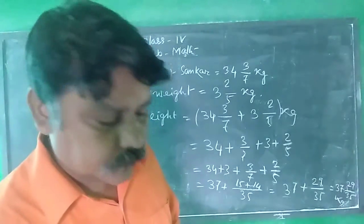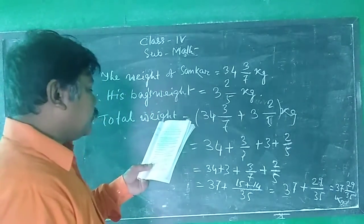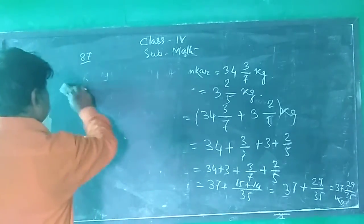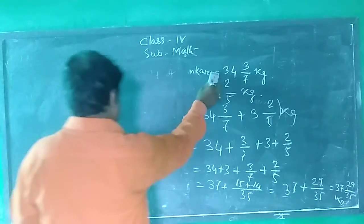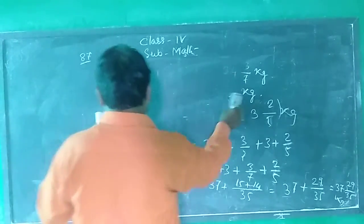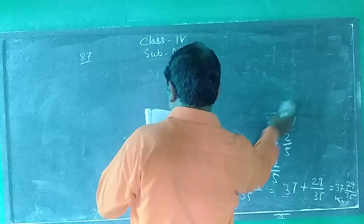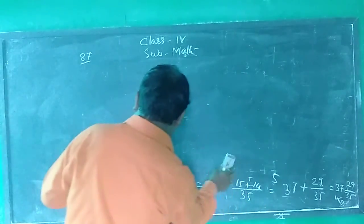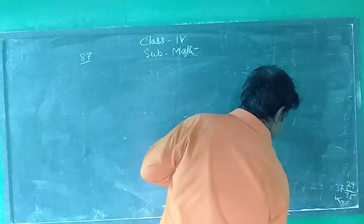The sum of two fractions is 17 whole 2 by 5. If the smaller fraction is 4 whole 1 by 3, find the bigger fraction.